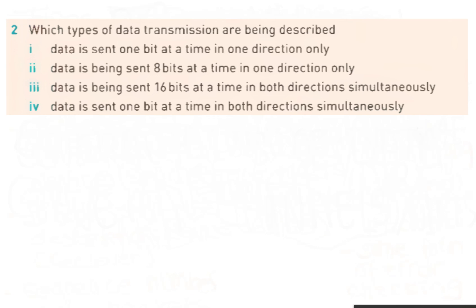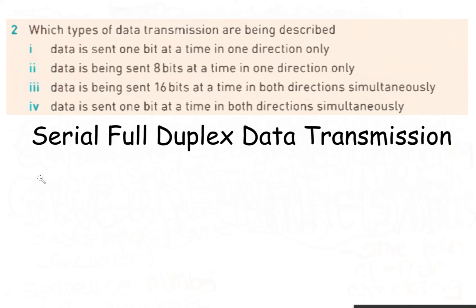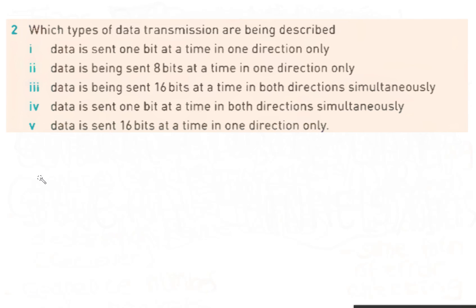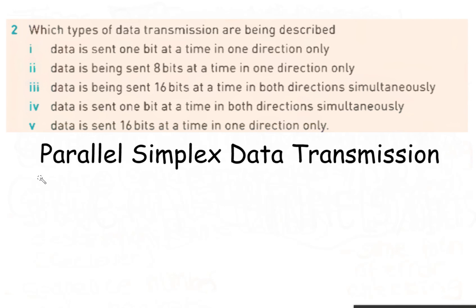Data is sent one bit at a time in both directions simultaneously. The correct answer is: serial full-duplex data transmission. Data is sent 16 bits at a time in one direction only. The correct answer is: parallel simplex data transmission.